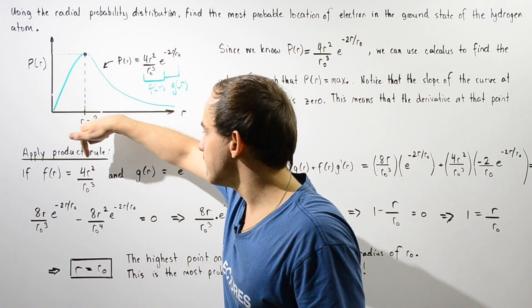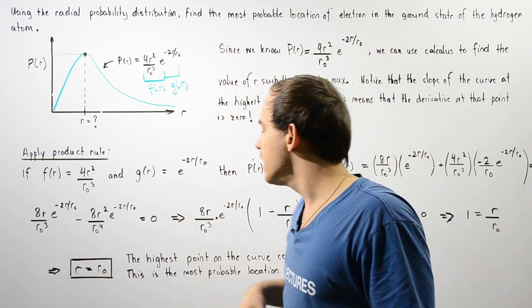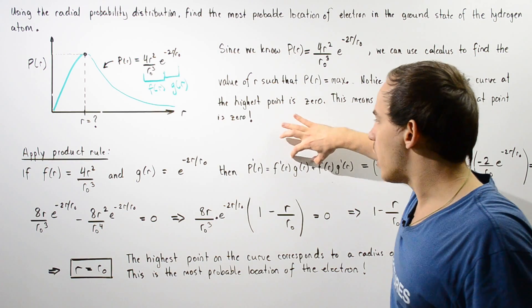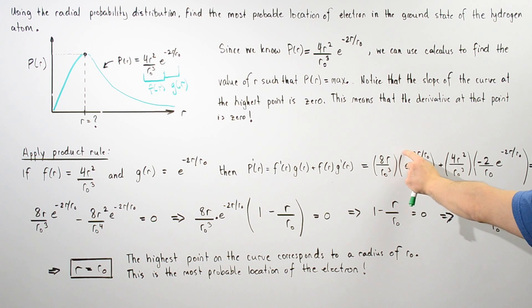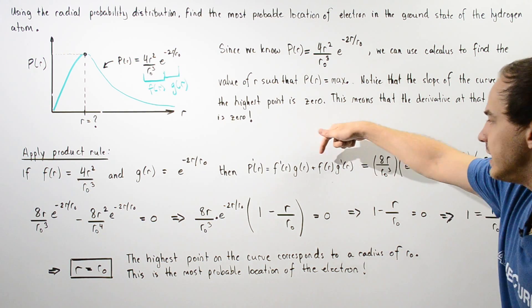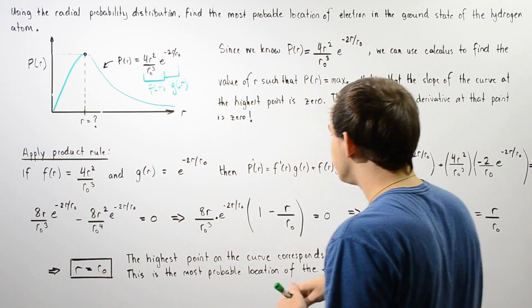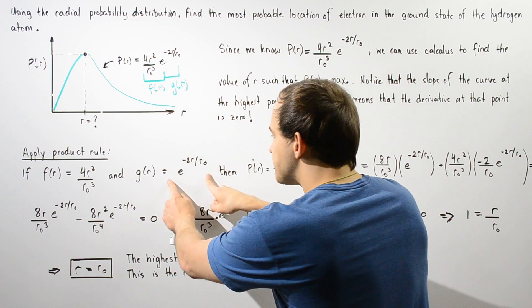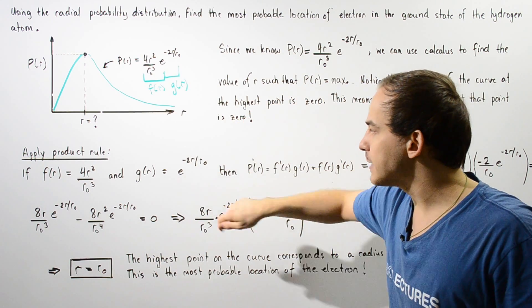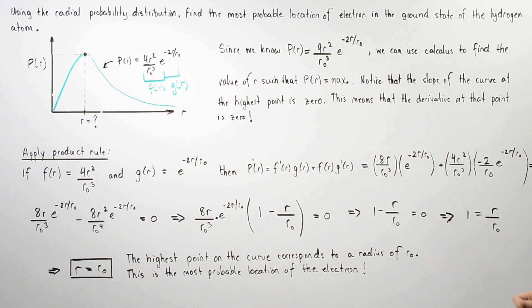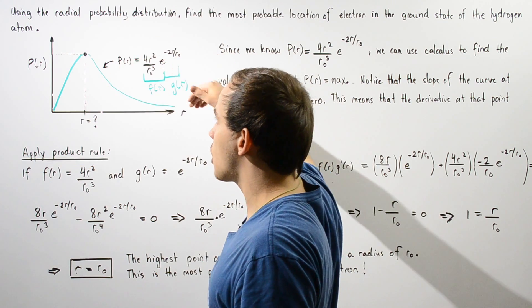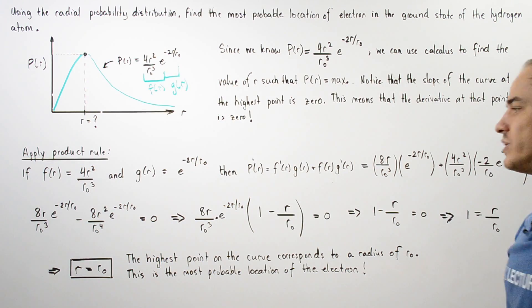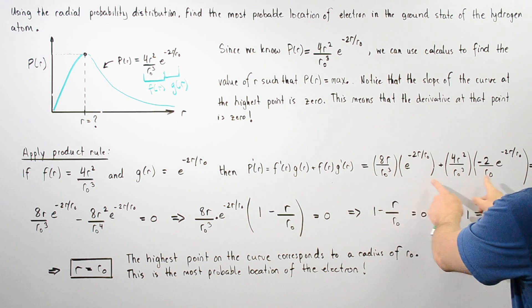The derivative of f is simply 8r divided by r₀³. So we have 8r divided by r₀³ multiplied by e to the negative 2r divided by r₀, added to f(r) — which is 4r² over r₀³ — multiplied by the derivative of g, which is negative 2 divided by r₀, times e to the power of negative 2r divided by r₀. We set this sum equal to zero, since the slope at the peak is zero.